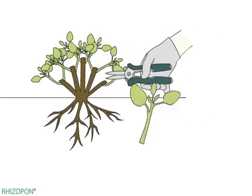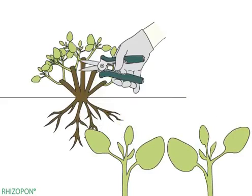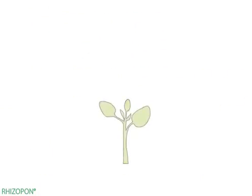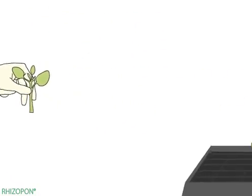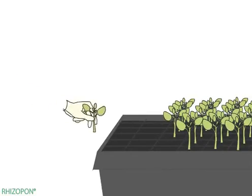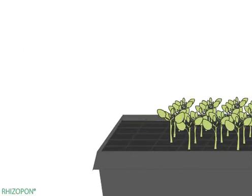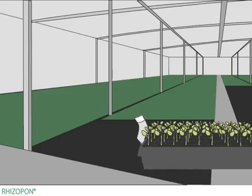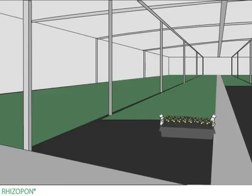The method is easy to use. Stick the cuttings in media, in trays, pots, or beds. Make up a Rhizopon rooting hormone solution. The solution contains rooting hormones that promote root formation.